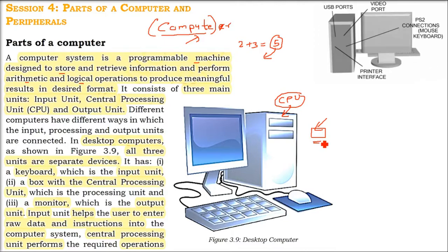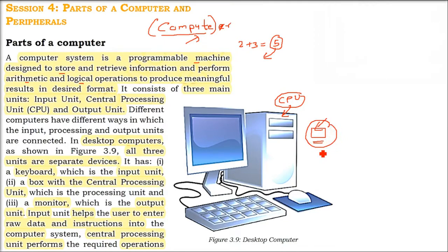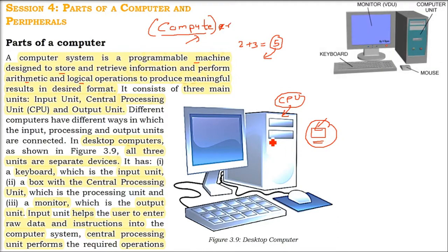You need to have a RAM. You have to have a hard disk. You have to have, say, SMPS, the power supply. So, there are so many things which are inside this CPU.